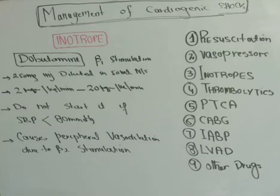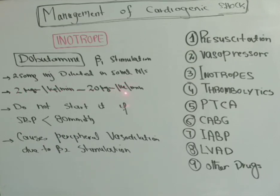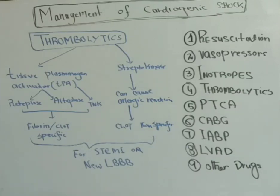For inotropic support, dobutamine is the drug of choice, though phosphodiesterase-3 inhibitors like amrinone and milrinone are also options. Dobutamine is a beta-1 stimulant: 250 mg injection diluted in 50 ml normal saline, infused at 2 to 20 mcg/kg/min. It improves cardiac performance but also causes peripheral vasodilation via beta-2 receptors. Do not start dobutamine if systolic blood pressure is less than 80 mmHg, as it can cause a dangerous further drop.